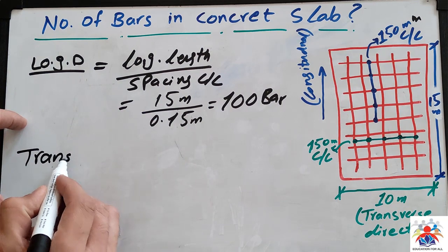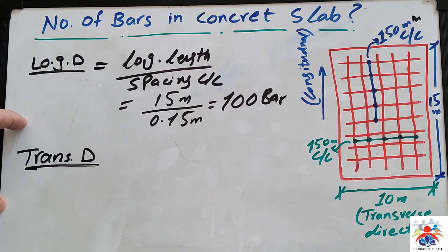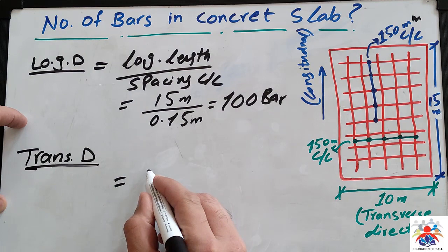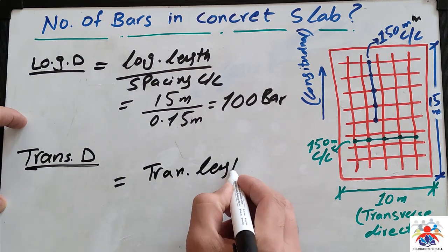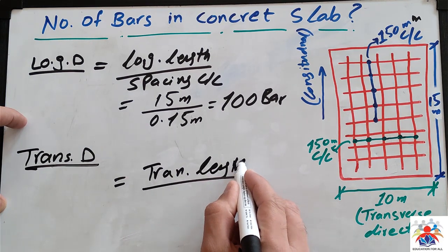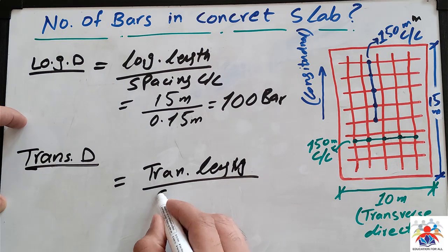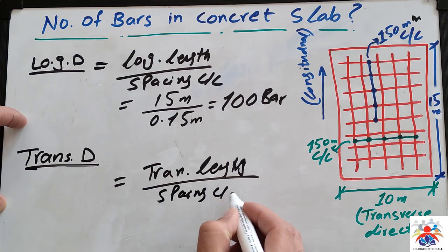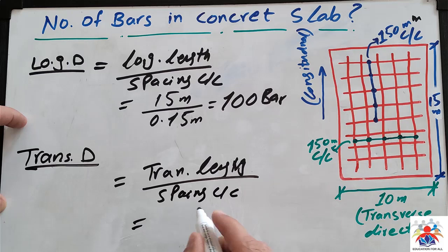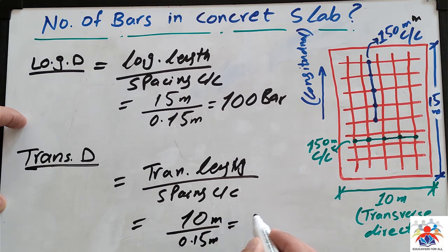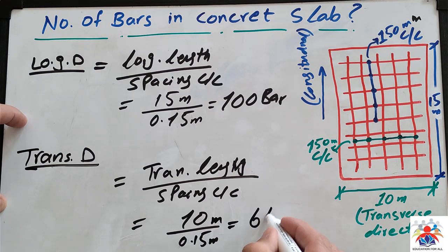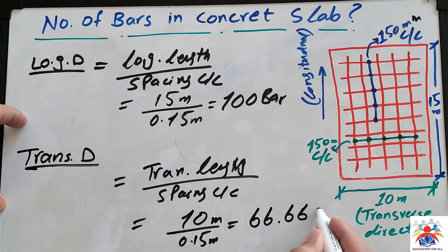Transverse direction would be equals to transverse length divided by spacing which is center to center. So in this case transverse length we have 10 meter divided by 0.15 meter again. So we will get at the end 66.66 bars.